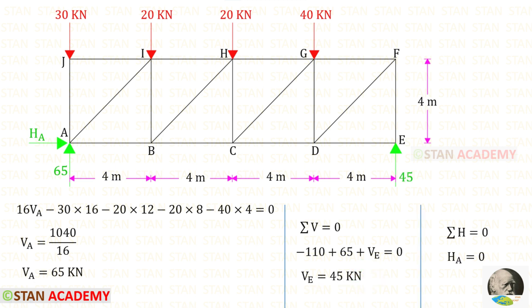Now let us apply sigma H equals 0. In this problem there is no horizontal load, so HA will be 0.